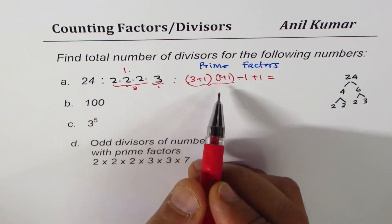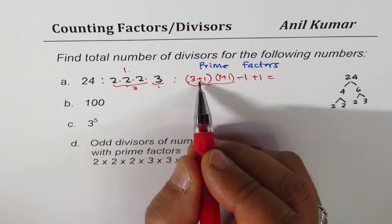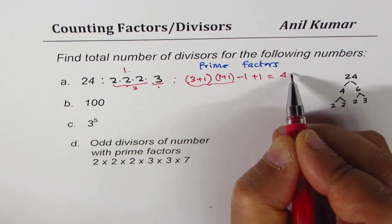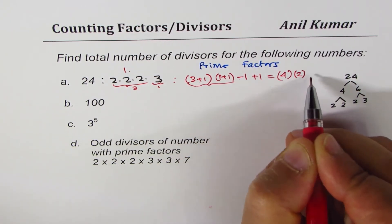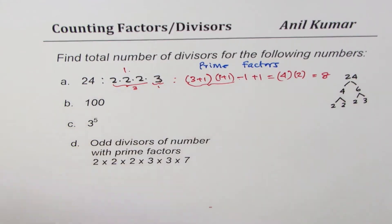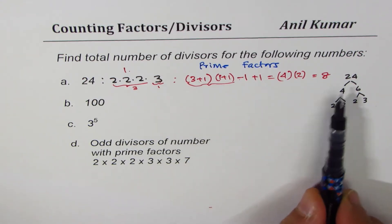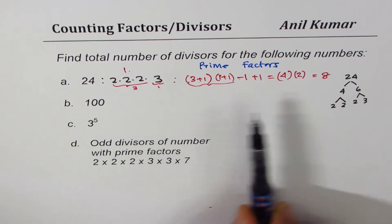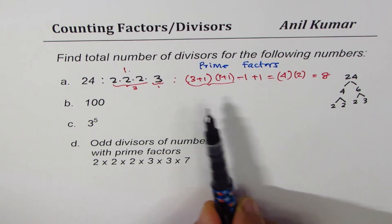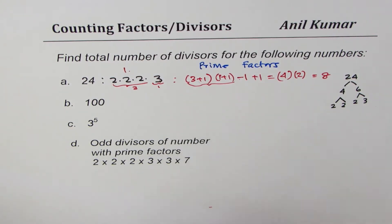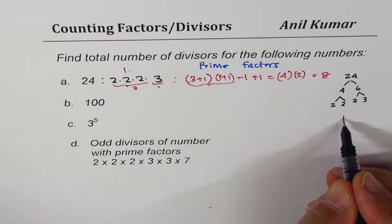So we get 4 times 2 as the answer and so we have 8 divisors of 24. Is that correct? So you may check 24, you can list the divisors and count them: 1, 24, 2, 12, 3, 8, 4, 6, right? So there are 8 of them.